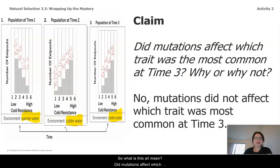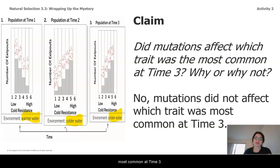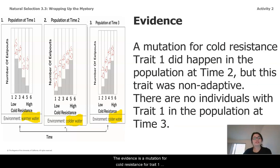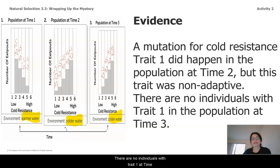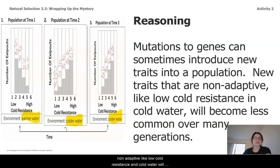So what does this all mean? Did mutations affect which trait was most common at time three? No — mutations did not affect which trait was most common at time three. The evidence is that a mutation introducing trait one with low cold resistance did occur at time two, but this trait was non-adaptive. There are no individuals with trait one at time three. The reasoning is that mutations can sometimes introduce new traits, but new traits that are non-adaptive — like low cold resistance in cold water — will become less common over many generations.